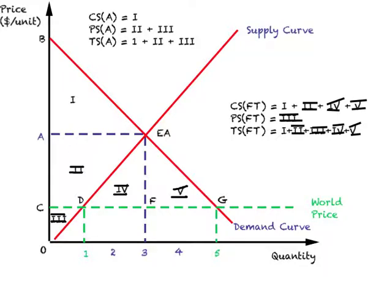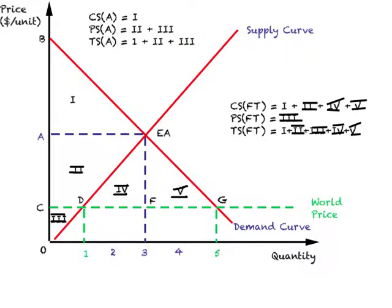Now let us compare the welfare consequences of free trade when a country imports with those of autarky. The equilibrium in autarky is EA. The area of the triangle denoted by one — enclosed here — represents consumer surplus in autarky. The producer surplus in autarky is this whole triangle, which is the sum of two plus three. So the total surplus in autarky is one plus two plus three — the sum of consumer and producer surplus.